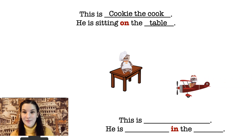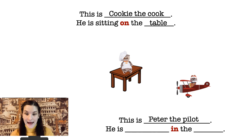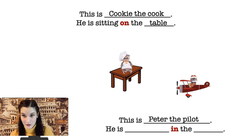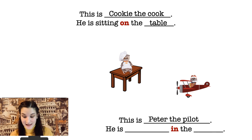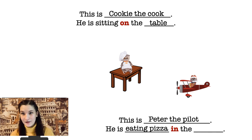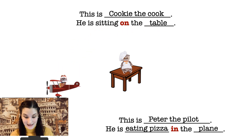Who is it? This is Peter the pilot. And now you need to tell me what Peter the pilot is doing. Look at Peter the pilot. What does he have in his hand — in his paw? He has a piece of pizza. So he is eating pizza where? In the ship? In the car? In the plane, of course! This is Peter the pilot and he is eating pizza in the plane.